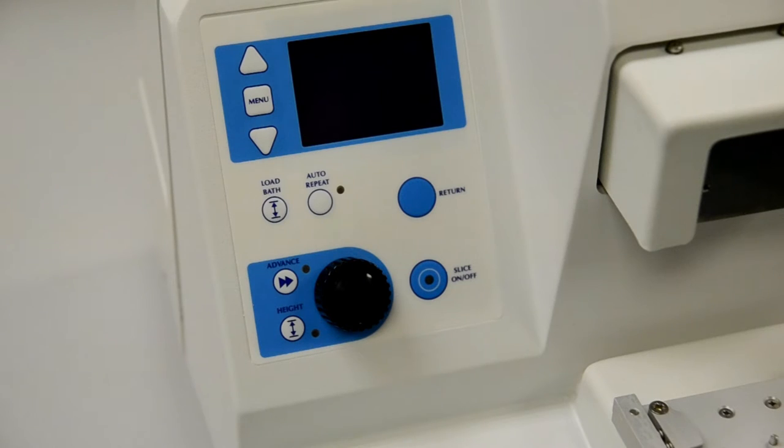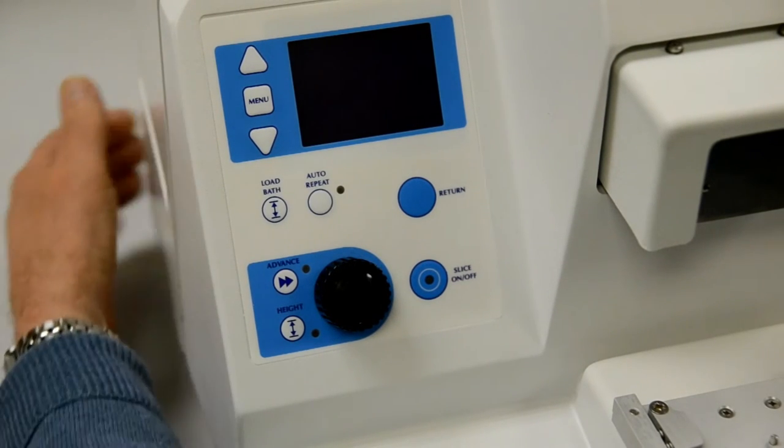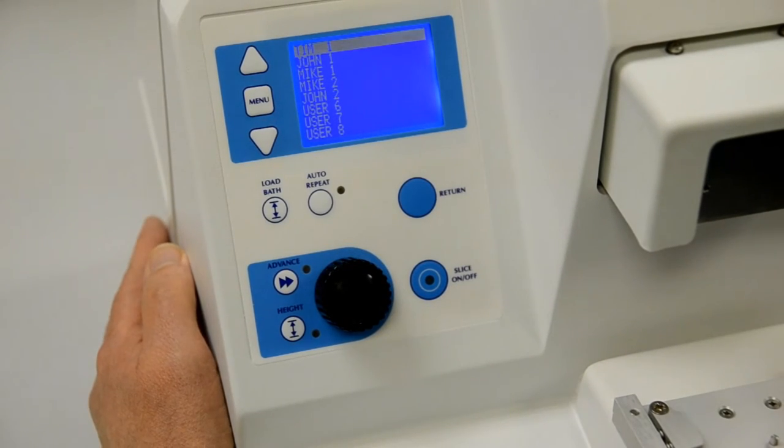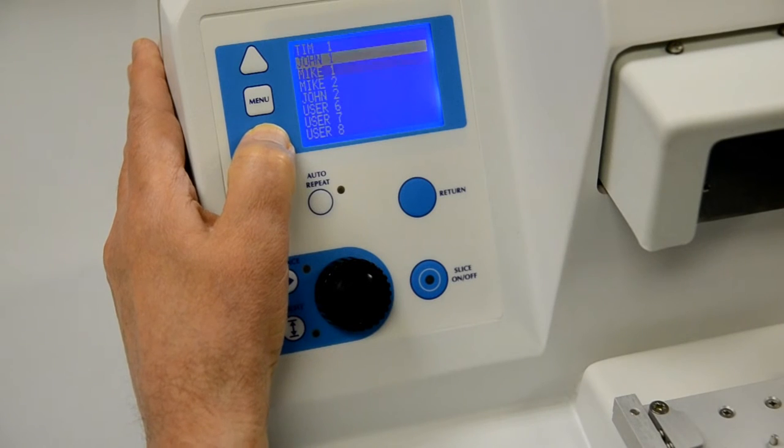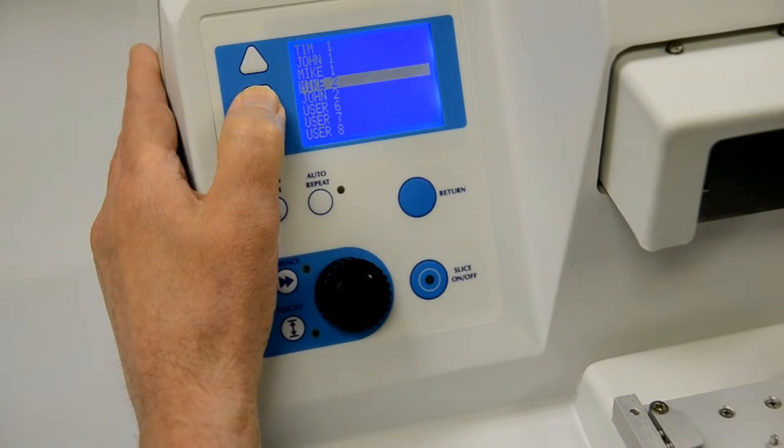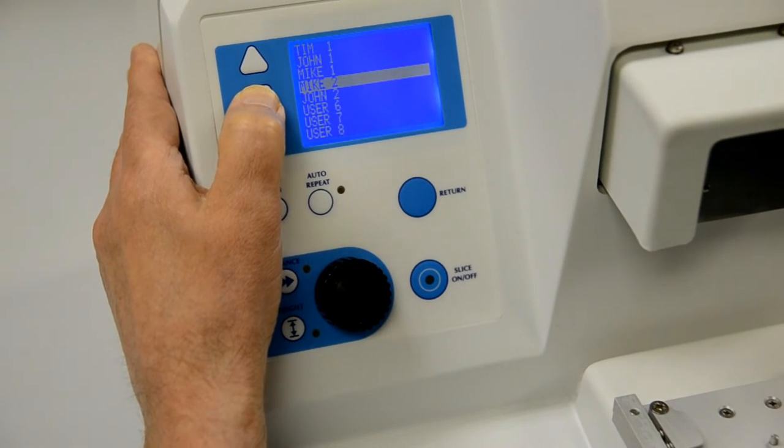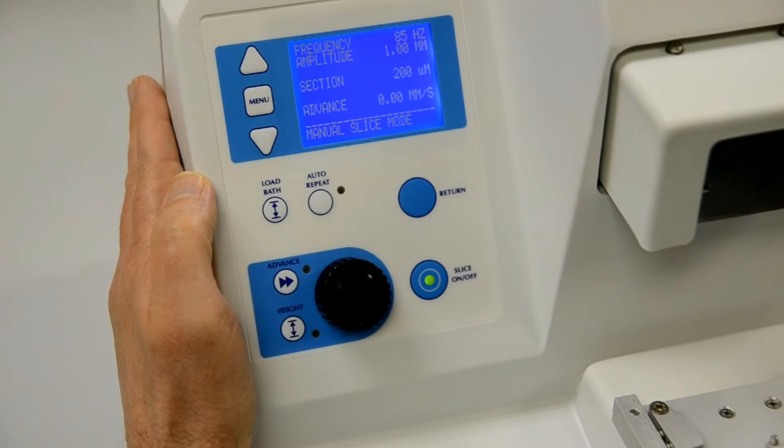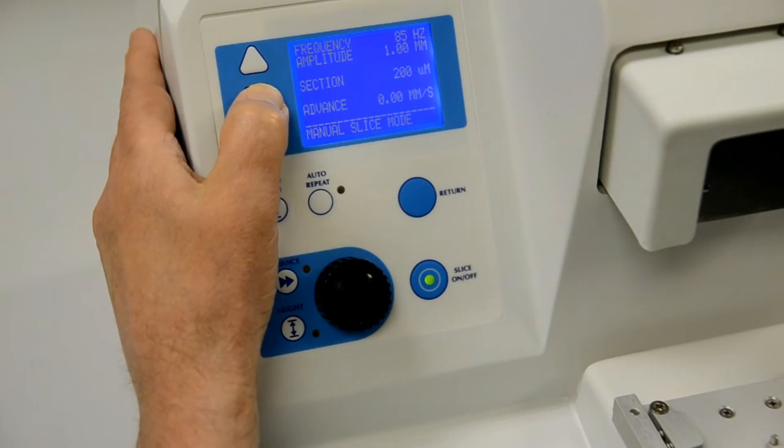The slicer memory can retain up to eight user names and their preferred operating parameters. When the instrument is switched on, the display will show a list of previously stored users and any unused slots. To select an existing user together with the operating parameters that were last used, simply use the up-down arrow keys to highlight and then press the menu key.